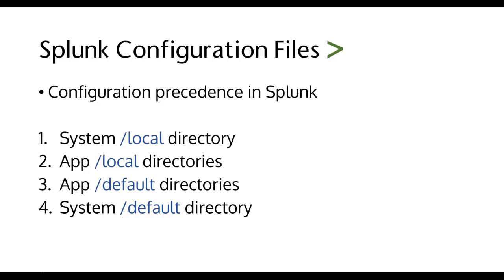Here's how Splunk determines precedence: number one is the system local directory, second is the app local directories, third is the app default directories, and fourth is the system default directories. So if you installed Splunk and didn't do any configurations, it would go all the way down to number four and just run Splunk in the default way right after installation.